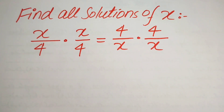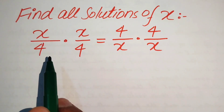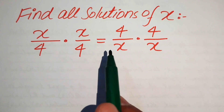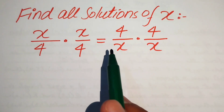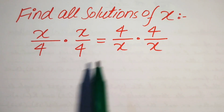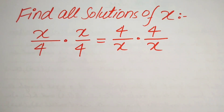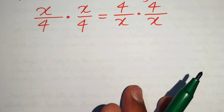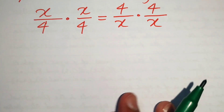Hello everyone. Find all the solutions of x in this problem. We have x over 4 into x over 4 equals 4 over x into 4 over x.